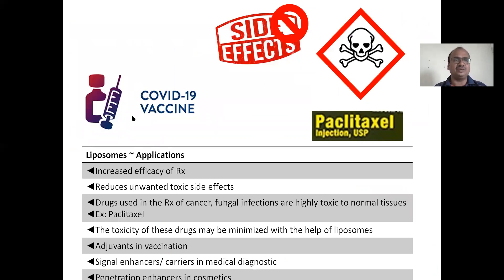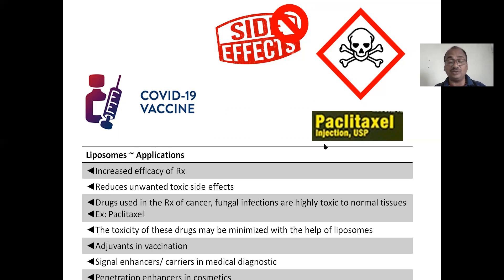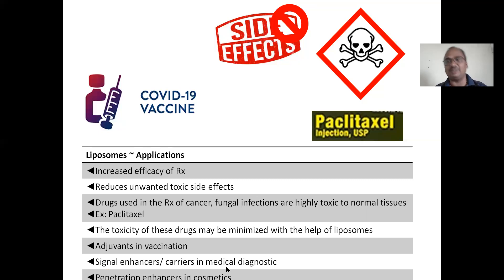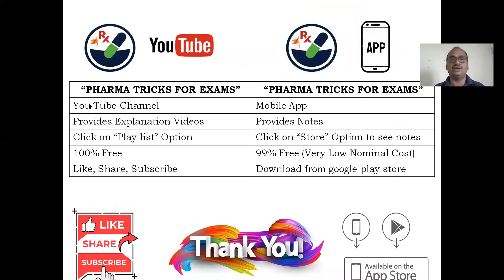Applications: liposomes are used for penetration enhancement. They are used as adjuvants in vaccination — very, very important. Used in biotechnological products. Increased efficacy of treatment. Reduces unwanted toxic effects to healthy tissues — for example, drugs used in cancer like paclitaxel are very toxic to normal healthy tissues, so toxicity can be reduced using liposomes. Used as signal enhancers and carriers in medical diagnostics. Also used in cosmetics for faster penetration of cosmetic ingredients inside the skin.